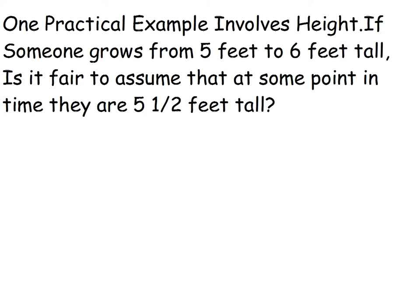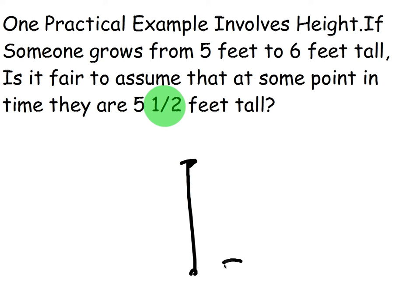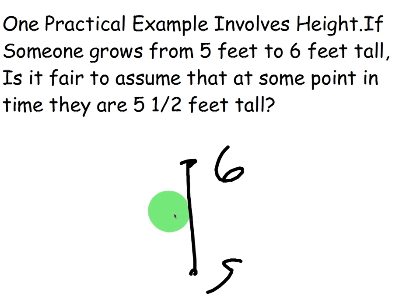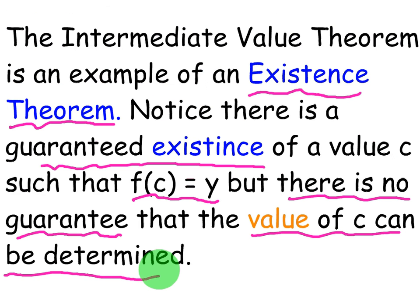Going back to this example, let's say somebody said, 'We know that this person has to have been 5 and a half feet.' Do we really know at what point in time? What if they didn't measure when they were 5 and a half feet, but they knew they went from 5 feet to 6 feet? We can't guarantee that we know when they were 5 and a half feet. We don't know if they were 13, 14, or 15. We just know they had to reach that height at some point in time. So it is an existence theorem — it doesn't guarantee a particular value.